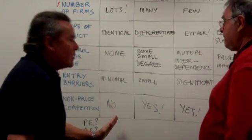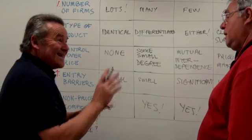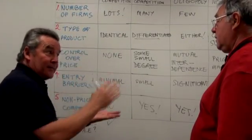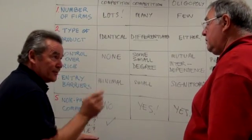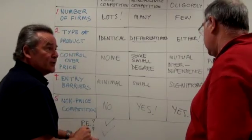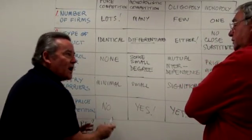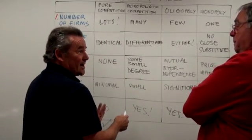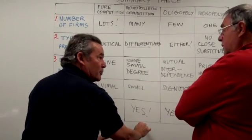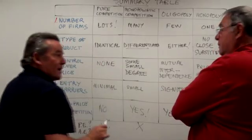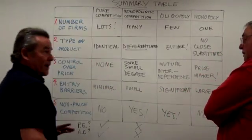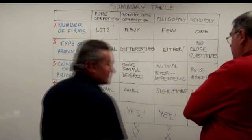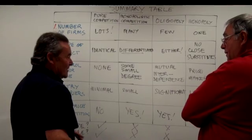In terms of efficiency outcomes: pure competition is productively efficient — they operate at the minimum of ATC — and allocatively efficient, where P equals MC. This is the holy grail, the point of reference. Monopolistic competition does not achieve this — there's excess capacity and they charge a price greater than marginal cost, so they're not allocatively efficient. The oligopolist again scores no and no. The monopolist charges a price greater than marginal cost — big time — there's a significant gap, and it's only the purely competitive market structure that delivers these efficiency outcomes.